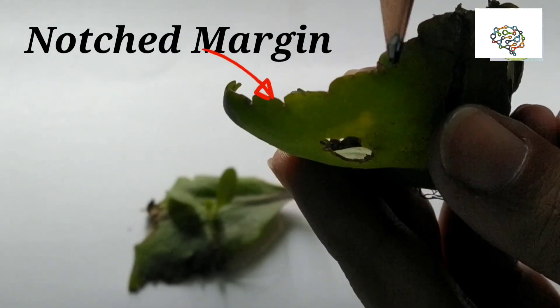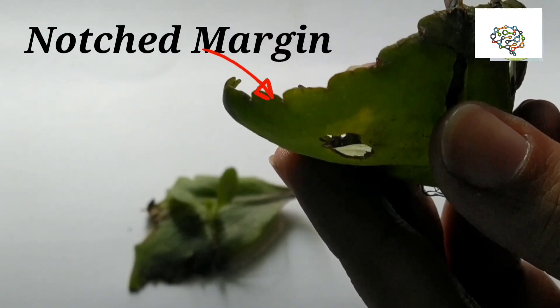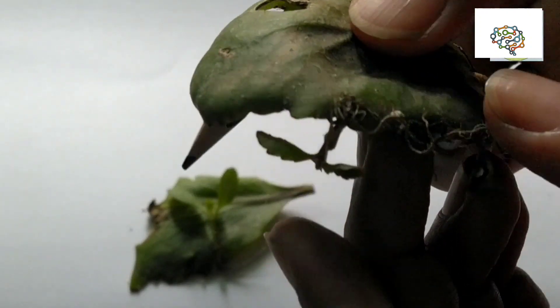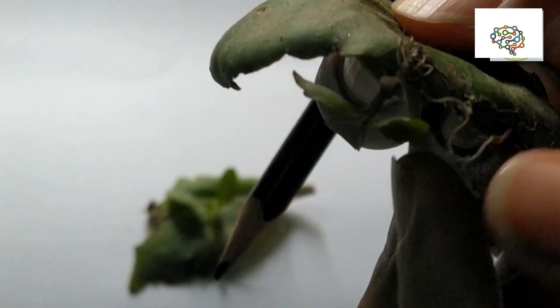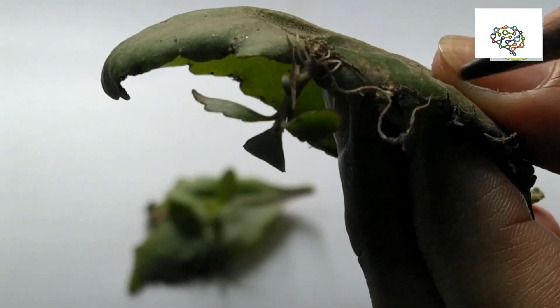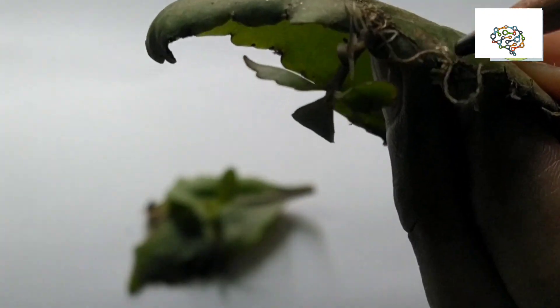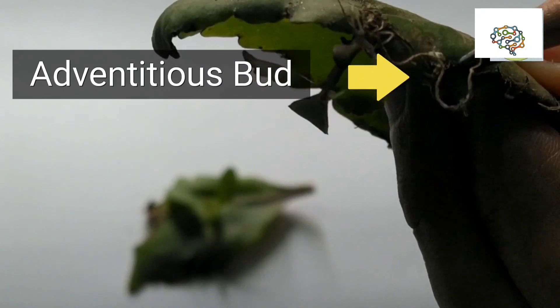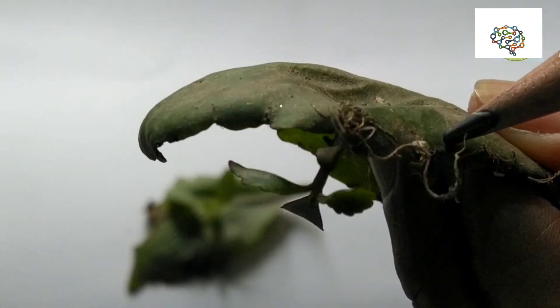At this notched margin, at this curved margin, we can see at some parts a swollen structure is present. This swollen structure is known as adventitious bud.